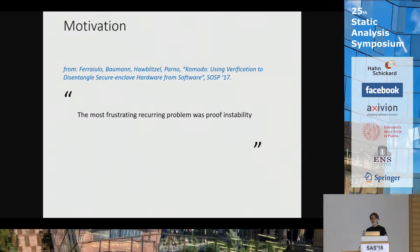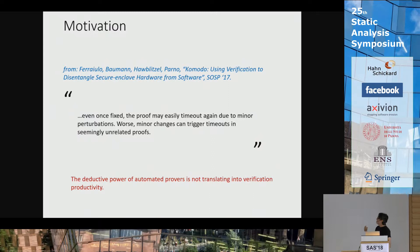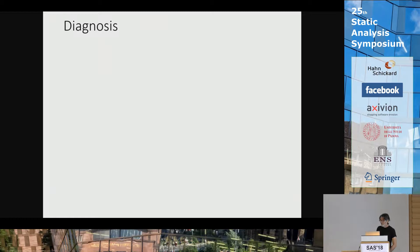Here are a few quotations from their experience. The most frustrating recurring problem was proof instability. Timeouts are challenging to debug because the solver generally fails to provide useful feedback. Even once fixed, the proof may easily timeout again due to minor perturbations. Worse, minor changes can trigger timeouts in seemingly unrelated proofs. So what I take away from these quotes is that even though Z3 is a very powerful automated prover, that deduction power is not translating into verification productivity in the way that we would like.